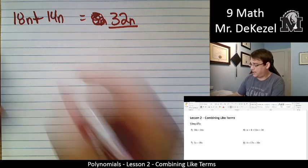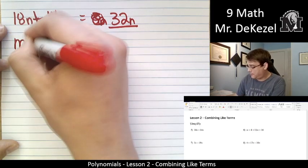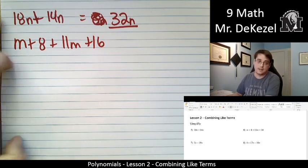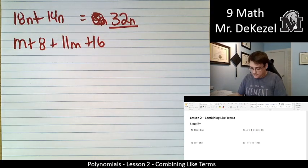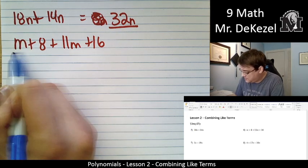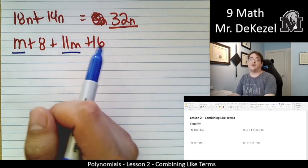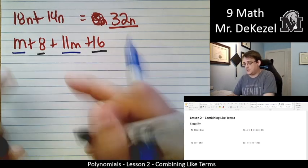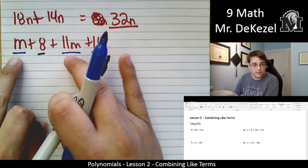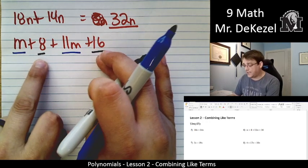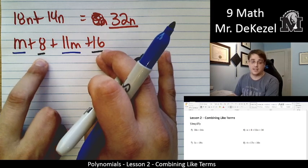Let's go to the right and do m plus 8 plus 11m plus 16. So in this case, we have something very similar, but almost kind of doubled. We have two terms that are the letter m, and we have two terms that are constants. We could say that these are in the first degree, and these are in the zeroth degree. And everything that's within the same degree, we can add together.